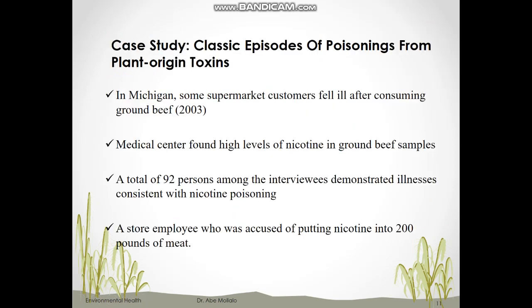Let's see a case study of nicotine poisoning, which is a plant-origin toxin found in ground beef. In Michigan in early 2003, some supermarket customers fell ill after consuming ground beef. The customers reported symptoms like nausea, vomiting, dizziness, and in one case an irregular heartbeat. Samples of ground beef were tested at a regional medical center and found to have high levels of nicotine, a toxin derived from tobacco — a plant. Epidemiologists interviewed the victims to examine the range of symptoms, which were consistent with nicotine poisoning. Finally, legal investigations led to the arrest of a store employee accused of putting nicotine into 200 pounds of meat that was later purchased by customers.